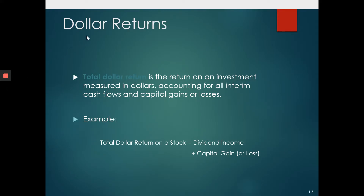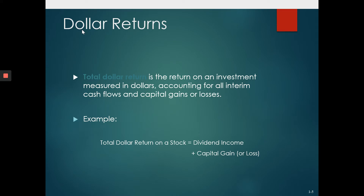There are different ways to find the return. One is simply the dollar return. Say if you have invested $100 in a stock and after some time you want to sell it and the price at that time is $125. So how much extra you got? You got $25. And during that time if you also got a $2 dividend, so overall your dollar return is $27.